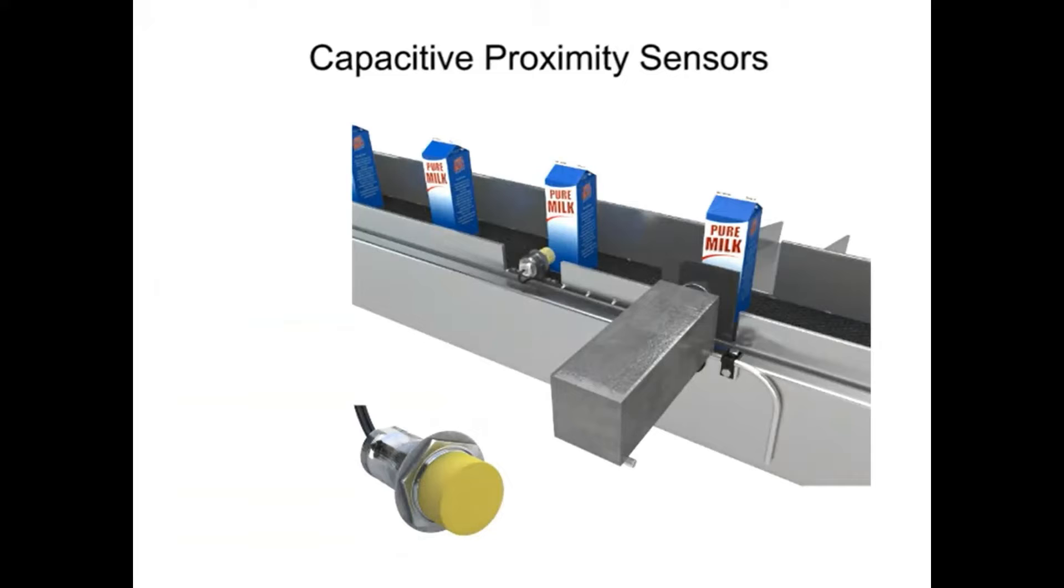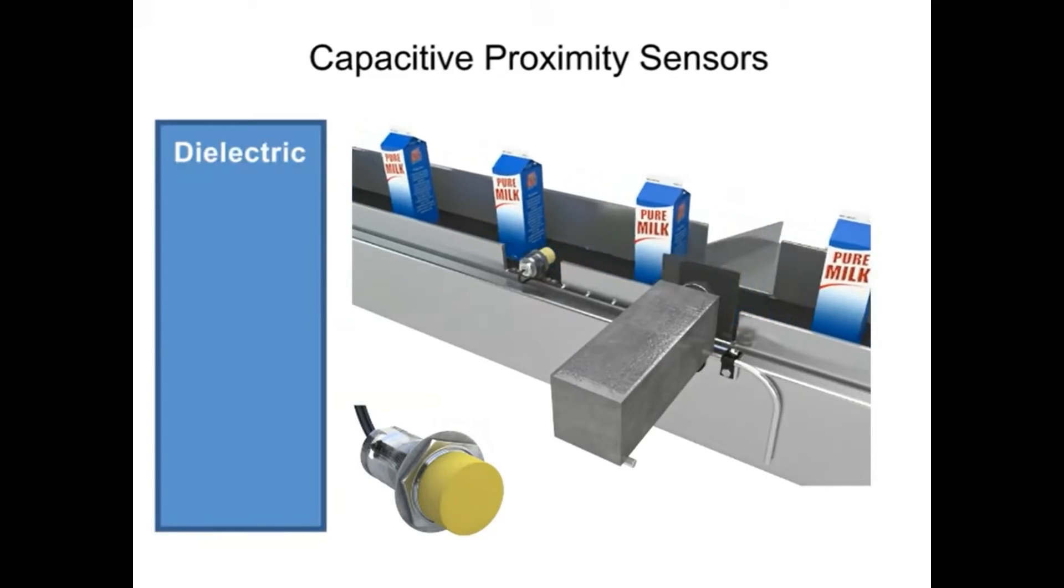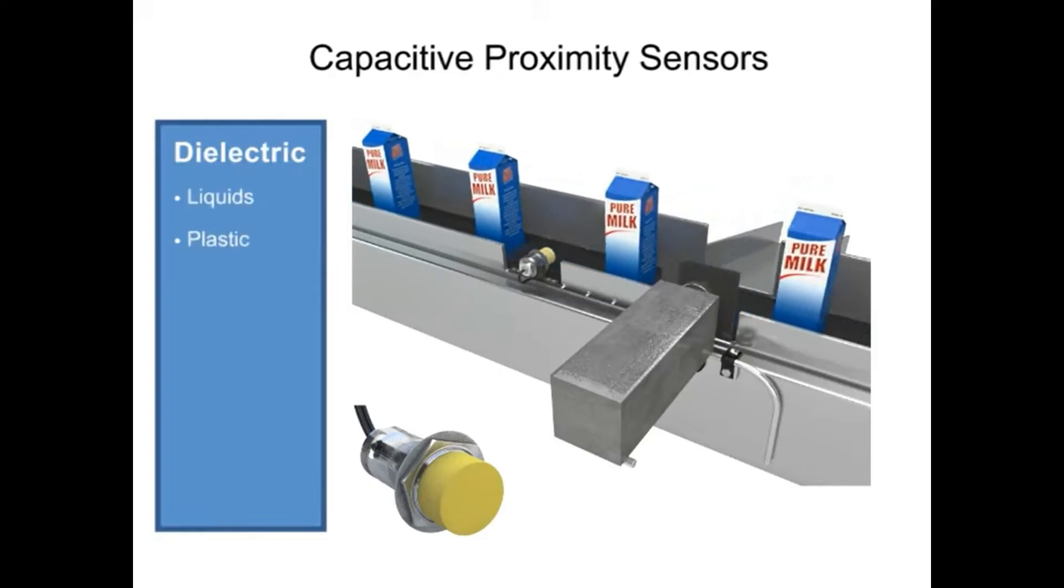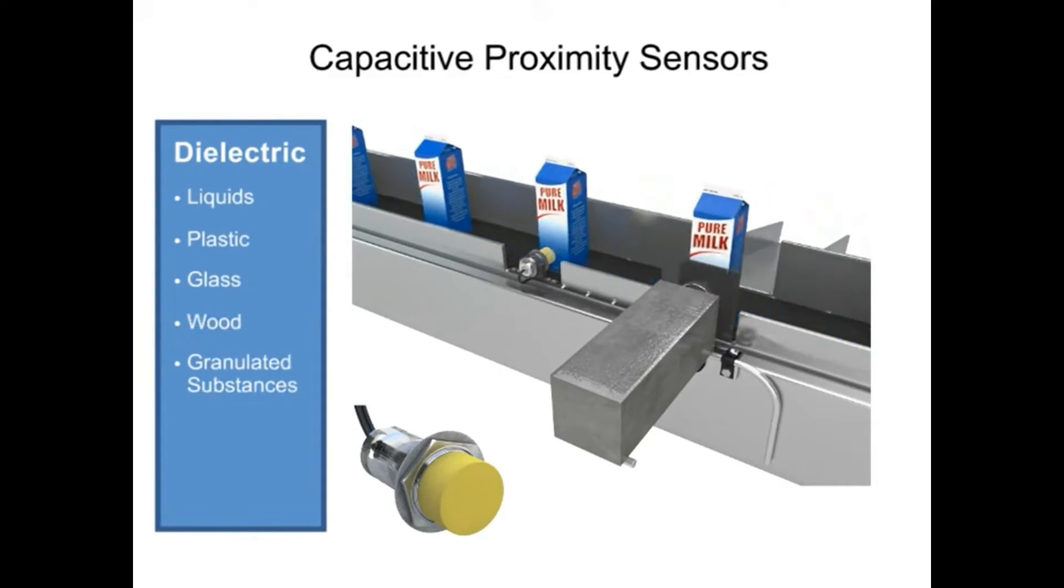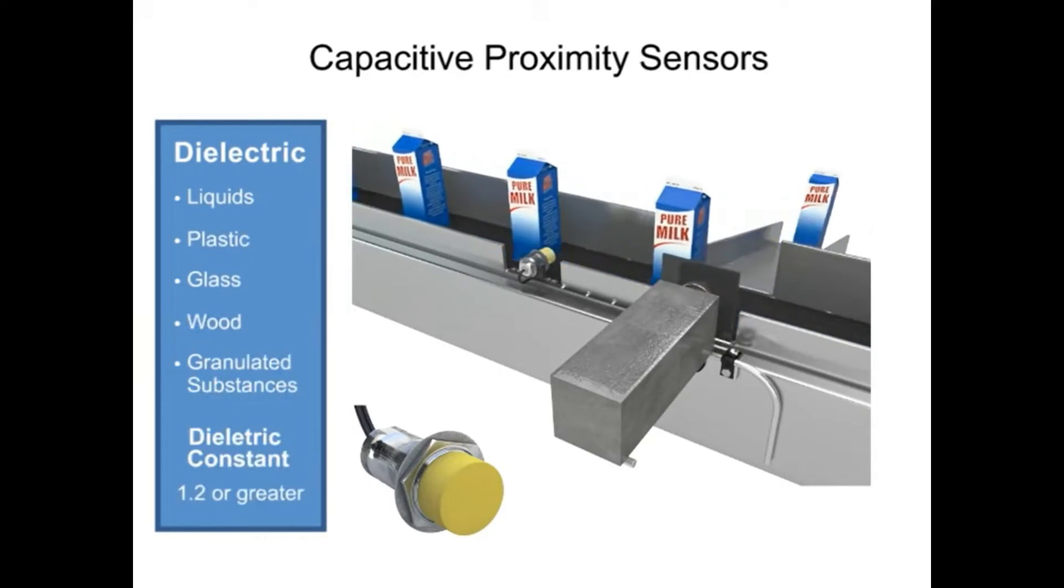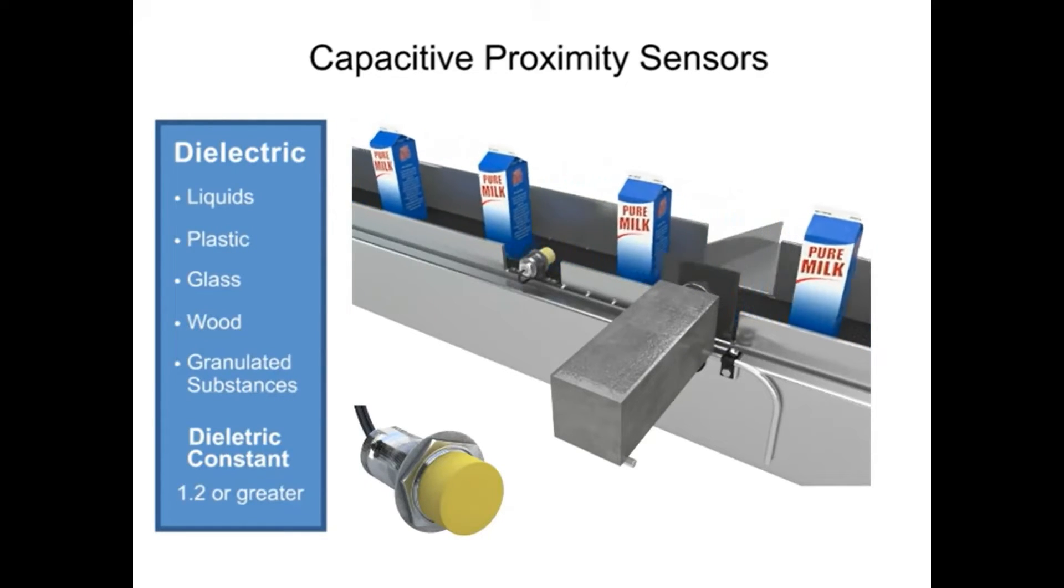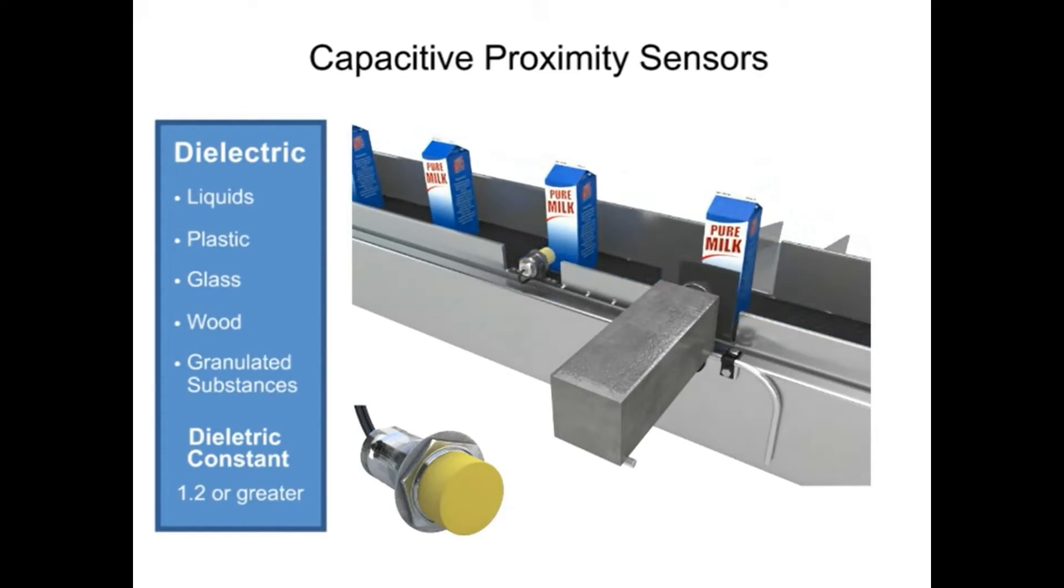Capacitive proximity sensors, on the other hand, can detect dielectric materials such as liquids, plastic, glass, wood, and granulated substances as long as it has a dielectric constant of 1.2 or more. Their range is from 3 mm to 15 mm depending on the dielectric material to be detected.